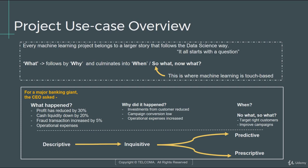Consider a use case for a bank. For a major retail bank, the CEO asked: what happened? When he asked that, there's a team aligned with strategy who would pull data to understand what happened. There's also a team associated with business intelligence and data science. When you ask what happened, these data science teams will try to give you answers as basic numbers. A set of candidate answers the CEO might receive: this year, profit has reduced by 30%, cash liquidity is down by 20%, cash transactions increased by 5%, and overall operational expenses are increasing — that's also a concern.